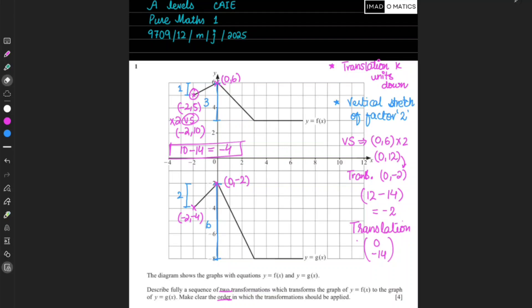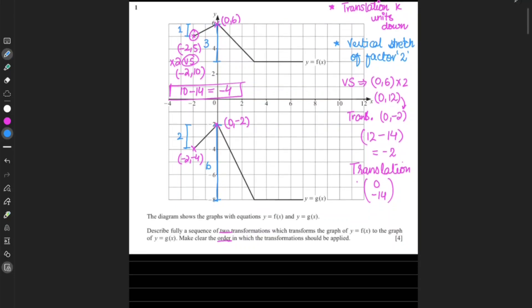I'm explaining this in a more detailed way. So first way of doing it will be: vertical stretch by a factor 2, and second is translation represented by a column vector zero comma minus fourteen.